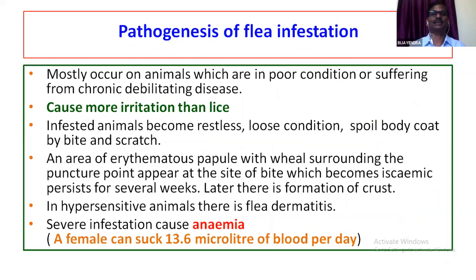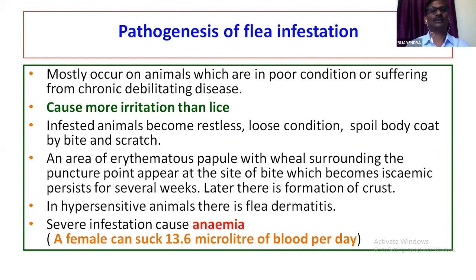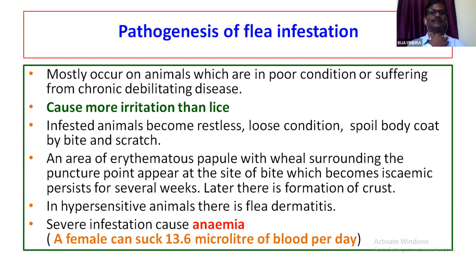Ctenocephalides felis orientalis is usually found infesting sheep and goats. This flea pierces and sucks blood — it has piercing and sucking type mouthparts. They inflict painful bites. Flea saliva contains many irritating substances to which the host tissue reacts, causing inflammatory and allergic changes.